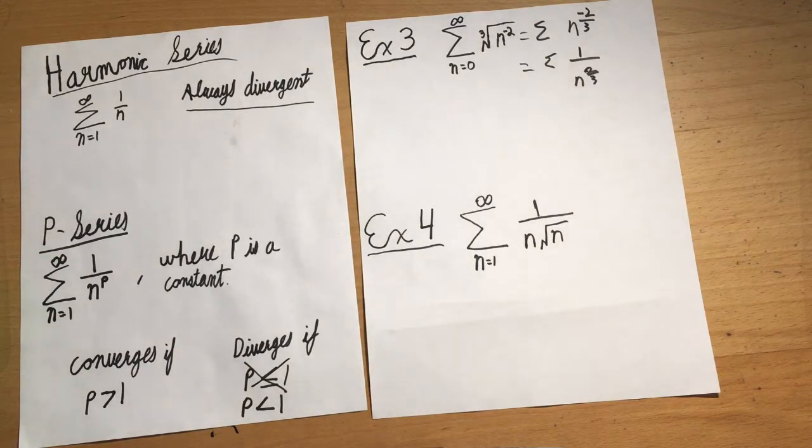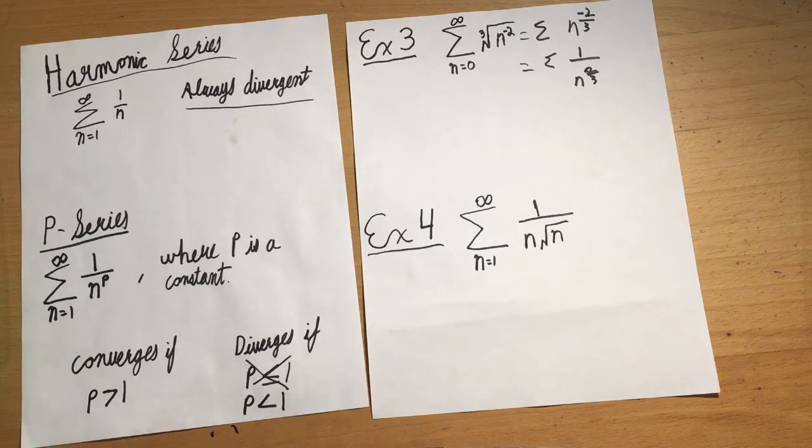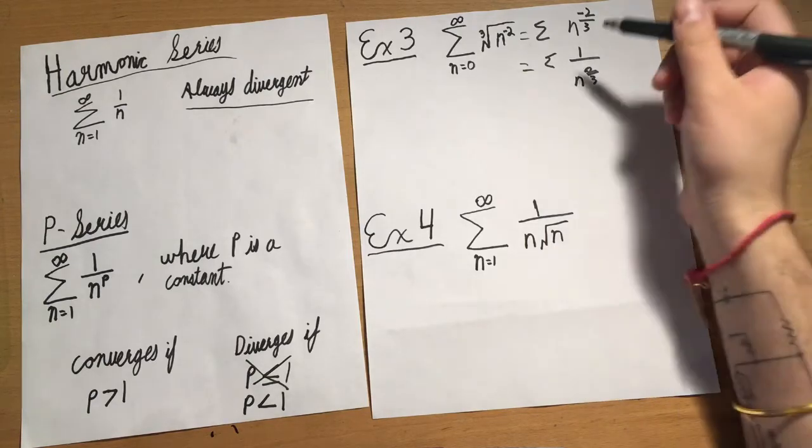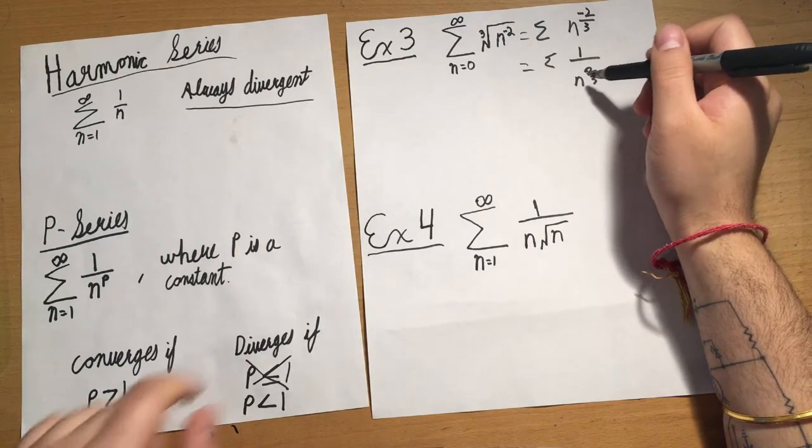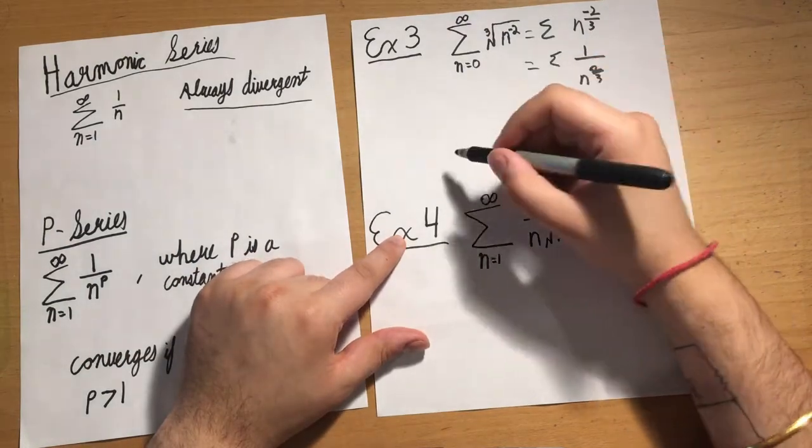If p is greater than 1, then it converges. If it's less than 1, then it's divergent. Given that p is less than 1, this series must be divergent.